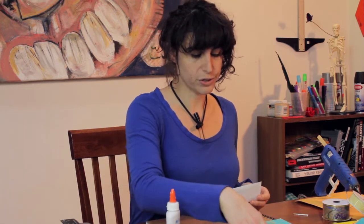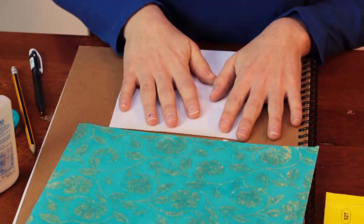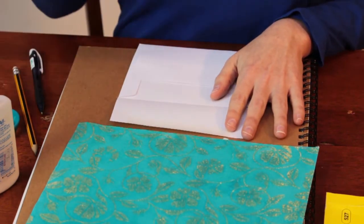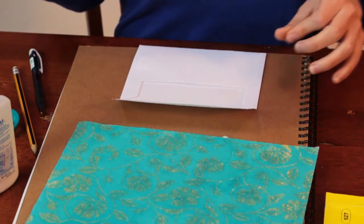But we are going to decorate the inside of our envelopes today and line it. So what you'll need to do this is a sheet of decorative paper, the envelope that you'd like to line, a pencil, some glue, a ruler, and scissors or an exacto knife.